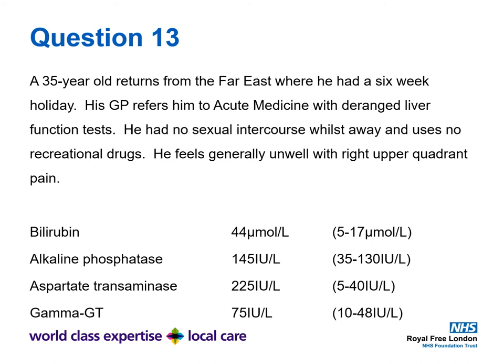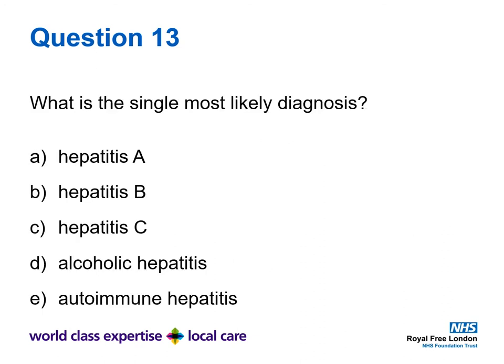Question thirteen. A 35-year-old returns from the far east after a six-week holiday. His GP refers him to acute medicine with deranged liver function tests. He had no sexual intercourse whilst away and uses no recreational drugs. He feels generally unwell with right upper quadrant pain. His LFTs show a bilirubin of 44 micromoles per litre, alkaline phosphatase of 145 IU/L, AST of 225 IU/L, and gamma-GT of 75 IU/L. What is the single most likely diagnosis? Is it A) hepatitis A, B) hepatitis B, C) hepatitis C, D) alcoholic hepatitis, or E) autoimmune hepatitis?